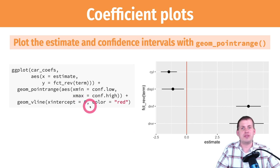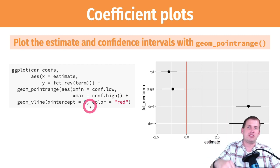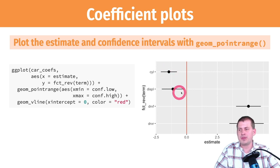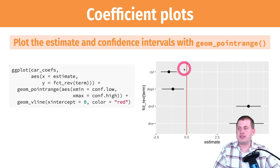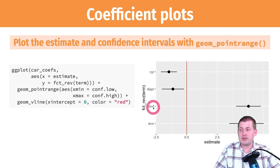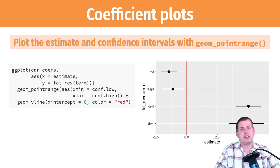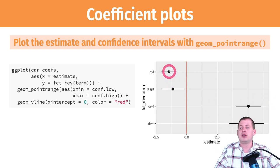Zero is where there's no effect — a slope of zero has no effect on your outcome. The resulting plot shows that cylinders and displacement have a negative effect on miles per gallon, and both are statistically significant because their error bars don't cross zero. Front-wheel drive and rear-wheel drive are both clearly positive. You can see the actual size of each coefficient without digging through a table — for example, front-wheel drive has a strong positive effect compared to four-wheel drive.